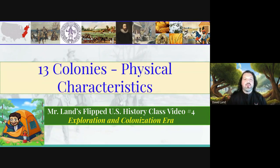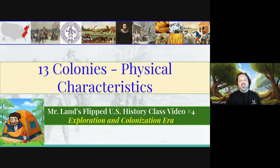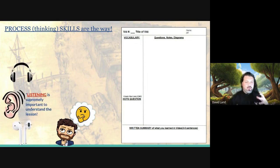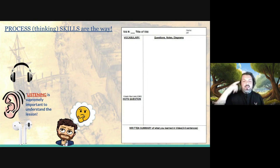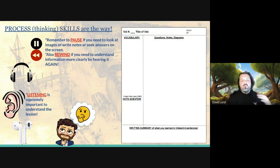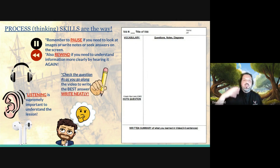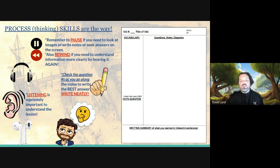Today we're going to get into the 13 colonies, looking at the physical characteristics that we would see as we take a tour of the 13 colonies of the pre-United States. Kids in my classroom who are getting their answers, you're going to use those listening skills. You're going to process while you read, think, and if you need to, pause and rewind to get those answers so we can come to class prepared and get into the deeper discussions.